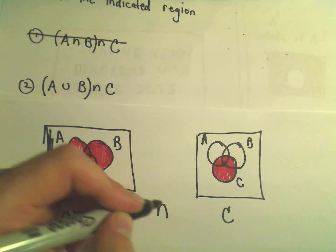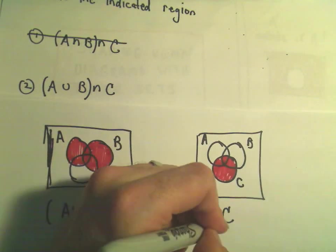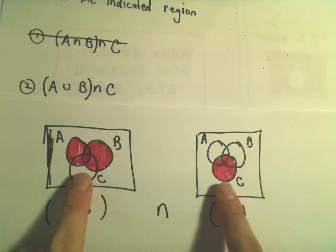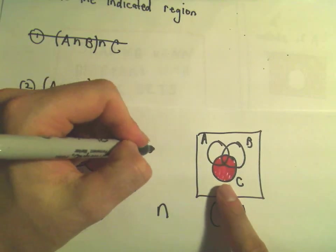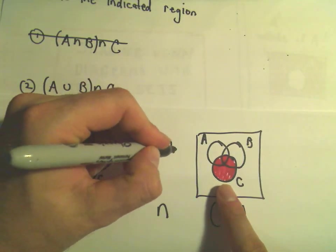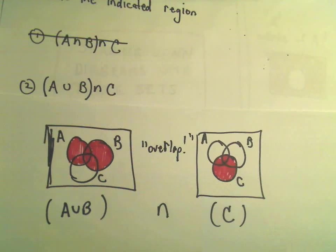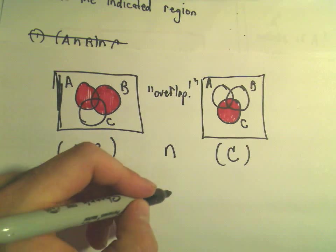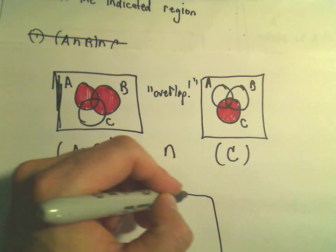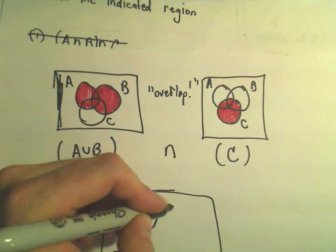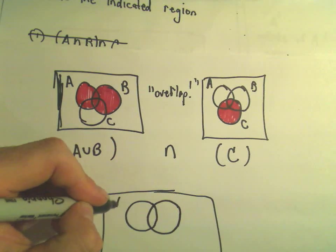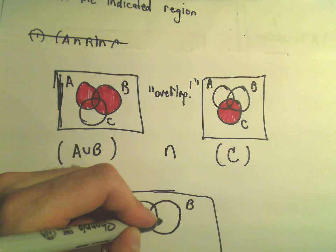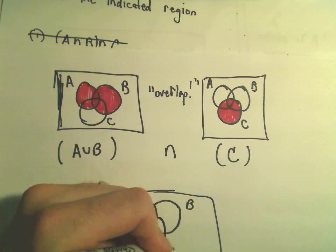But again, now we're doing the intersection of these two regions. So again, I'm thinking about the overlap. I'm thinking about the overlap of those two regions. So in this case, I believe the overlap or again, what regions are shaded in both diagrams? Well, there's A, there's B, there's C.